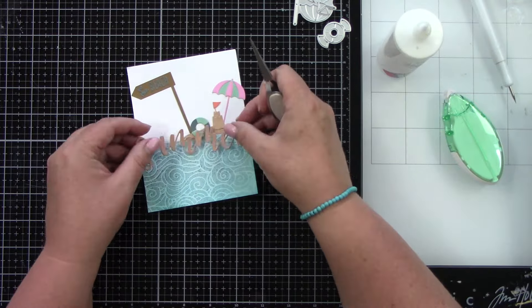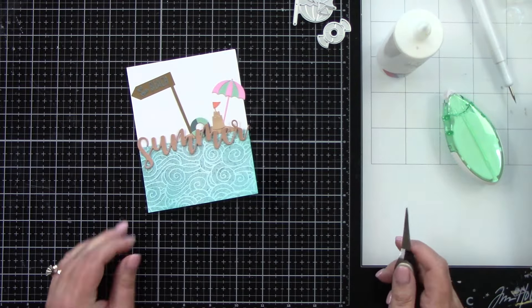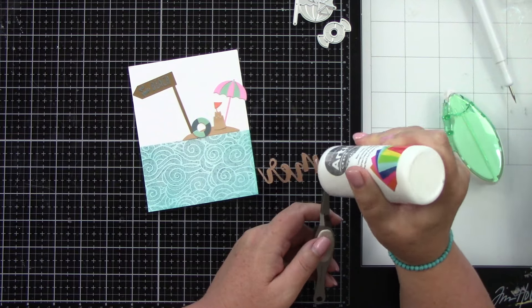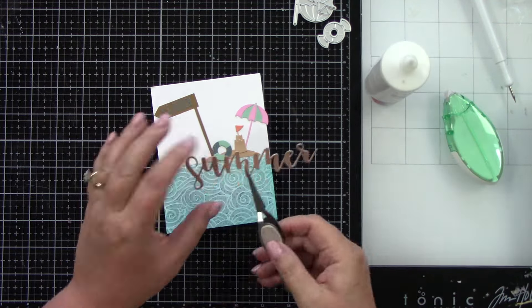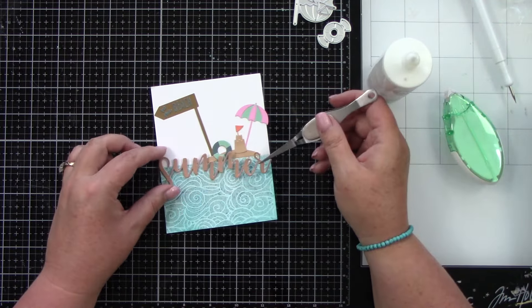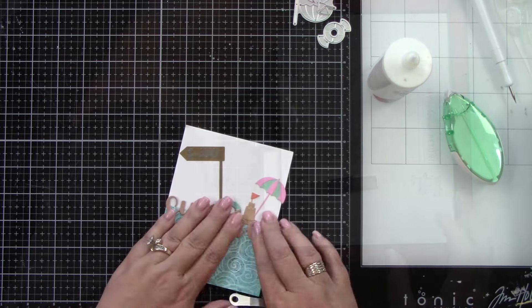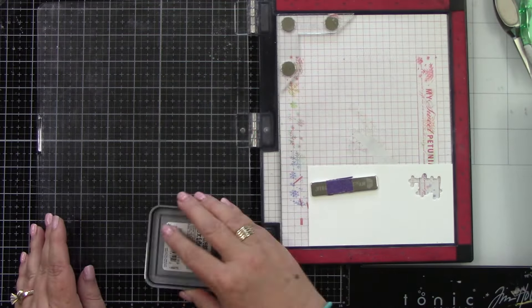And then we have our word summer. But I still cannot get over how well that wave stencil came out just by spraying that distress spritz on the background. It's so pretty.